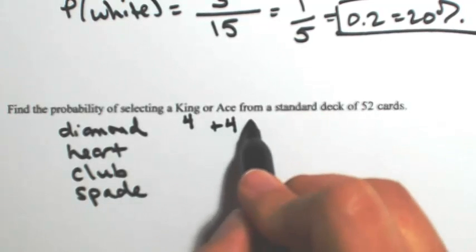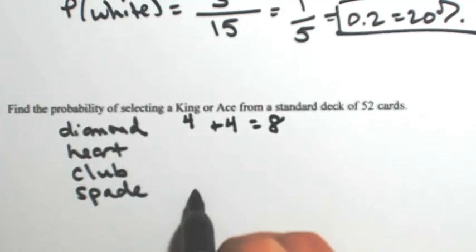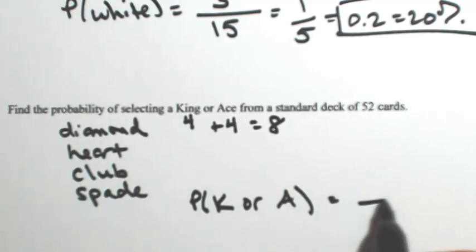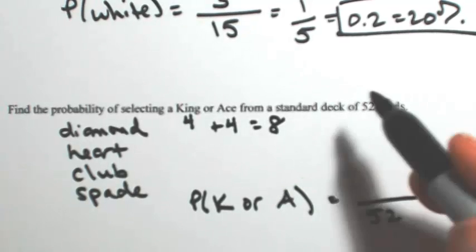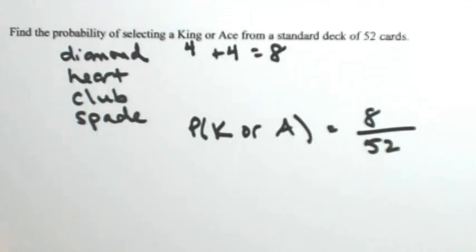If you want a king or an ace, there are eight cards that satisfy that. The probability of having a king or an ace out of 52 cards: eight of them are kings or aces.